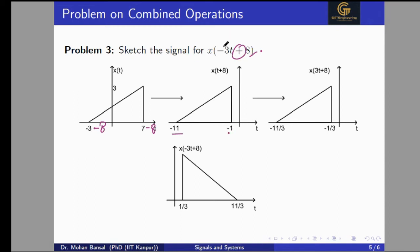Now we apply scaling by a factor of three — we divide by three. So the signal spans from minus eleven divided by three to minus one divided by three. The shape of the signal looks the same, but the width is compressed. The signal now ends at minus one divided by three, and starts at minus eleven by three.